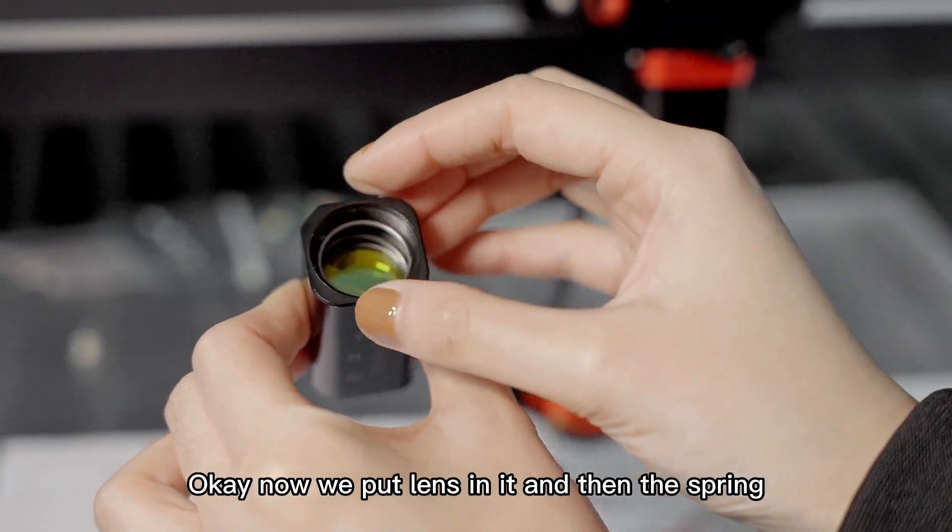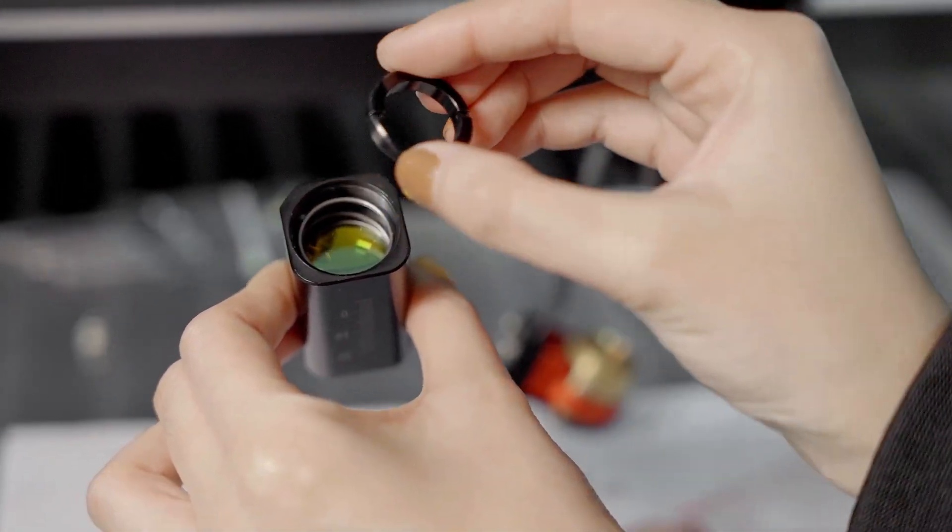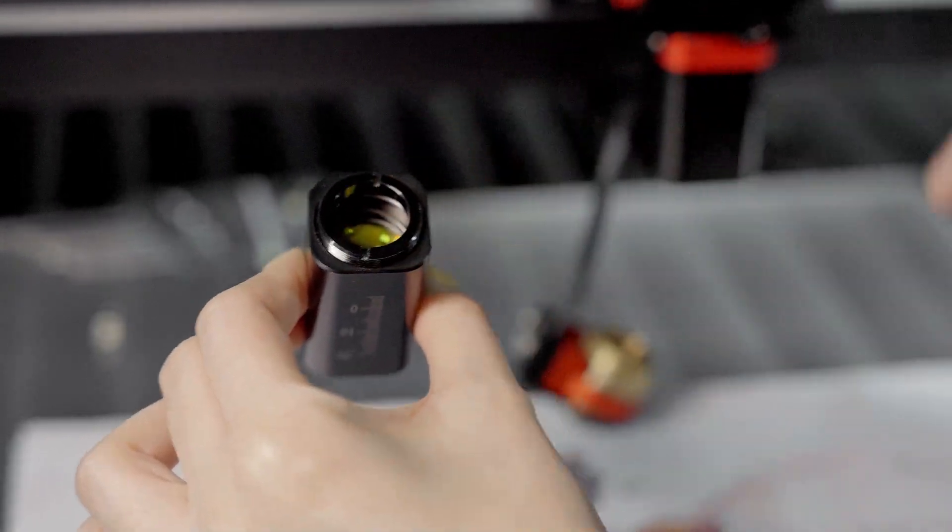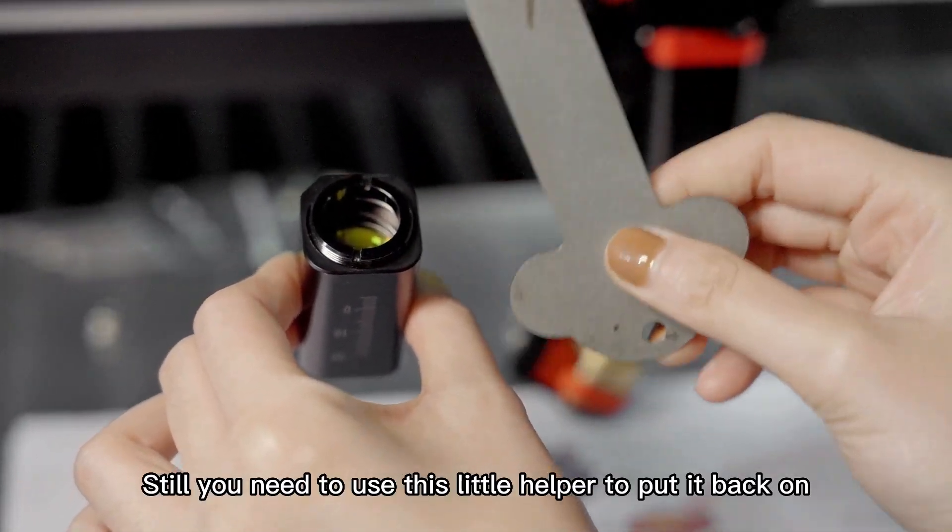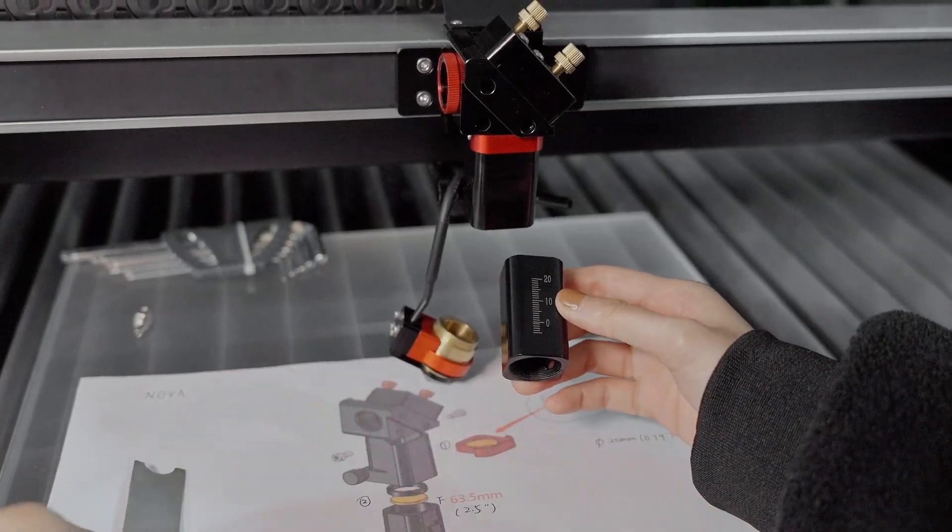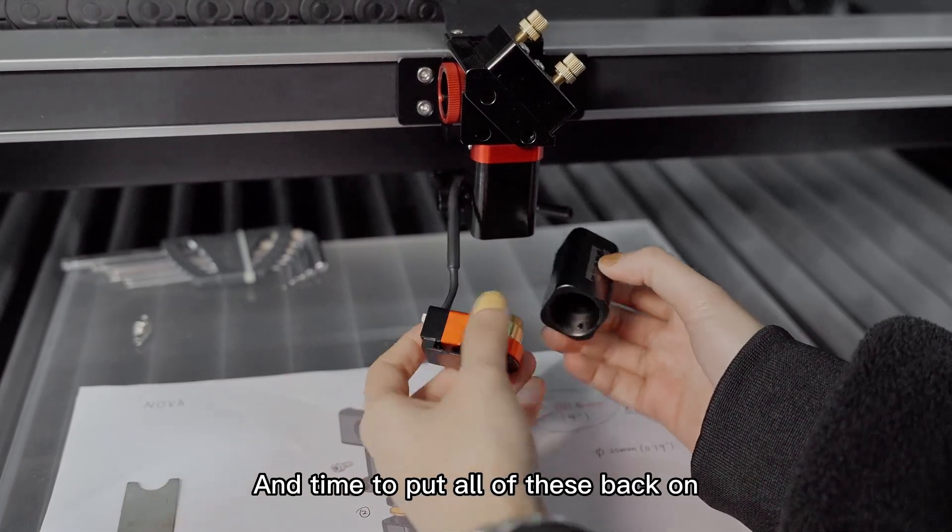Okay. Now we put lens in it, and then the spring, and then the spacer. Still, you need to use this little helper to put it back on. Okay. Now we put the lower one in it and time to put all of these back on.